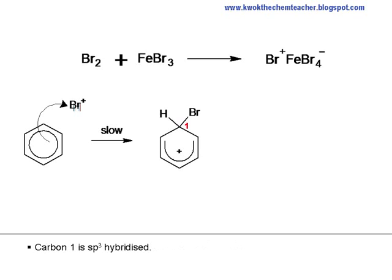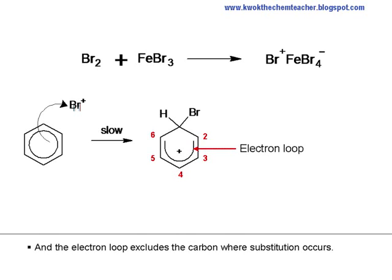Carbon 1 is sp3 hybridized. The other carbon atoms are sp2 hybridized. The positive charge is delocalized throughout these carbon atoms, and the electron loop excludes the carbon where substitution occurs.